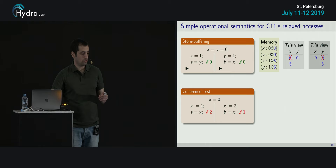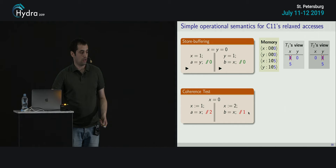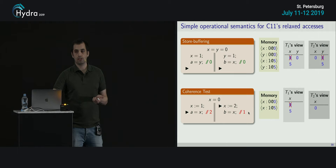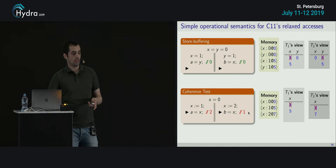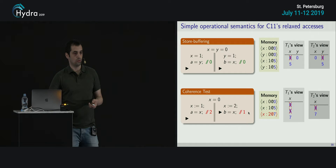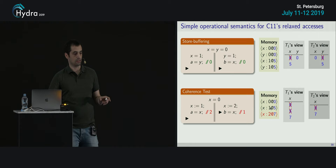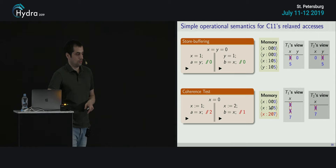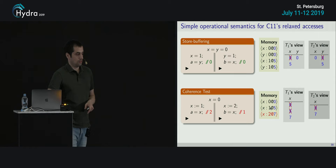We also get sequential consistency per location for free. For a one-location program, if the first thread writes X=1 at timestamp 5 and the second thread writes X=2 choosing timestamp 7, then the first thread can read 2 (timestamp 7), but the second thread cannot go back and read 1 (timestamp 5) because its view is already at 7. With this simple mechanism, you get almost relaxed accesses — specifically, sequential consistency per location. To also capture load buffering, we introduce promising: a thread can declare in advance that it will write a certain value at a future timestamp, putting the message in memory before actually running that instruction.